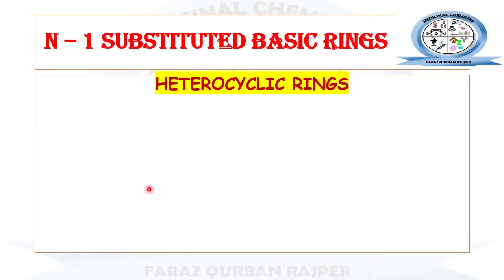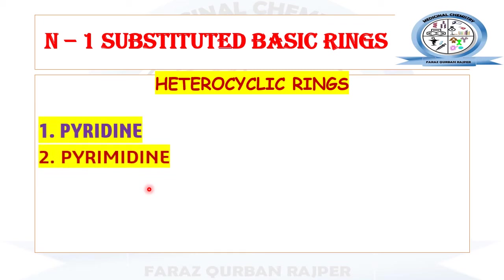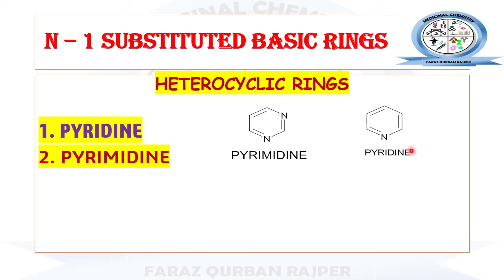Let's consider the common heterocyclic rings used for N1 substitution. One is pyridine and another is pyrimidine. The structure of pyridine is similar to benzene except that one carbon in the benzene ring is replaced by a nitrogen heteroatom. Pyrimidine has two nitrogen atoms replacing carbons at positions one and three of the six-membered ring.